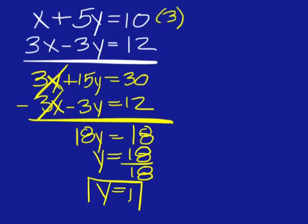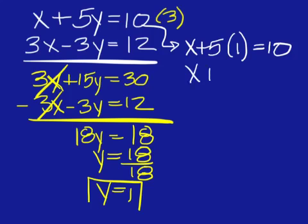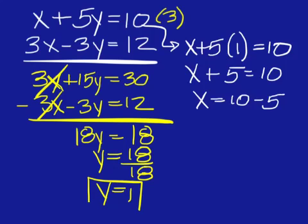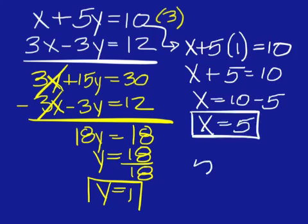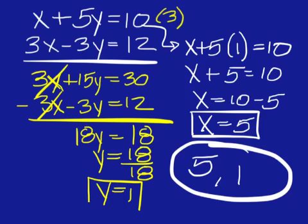Now plug that back in to the top or the bottom equation. I'll use the top. X plus 5 times 1 equals 10. Simplify. And then move. Change the operation. Simplify. And there's your answer. 5, 1 is the final answer.